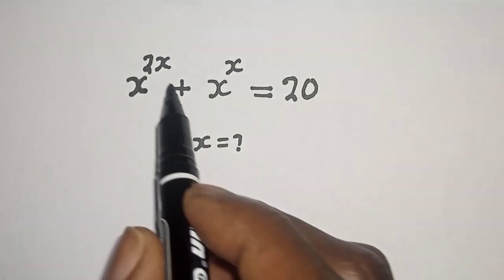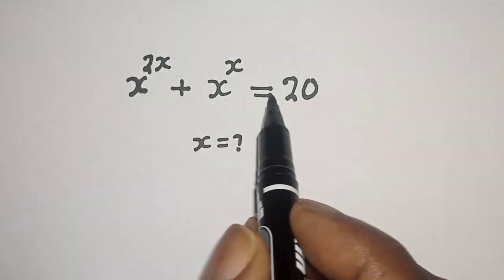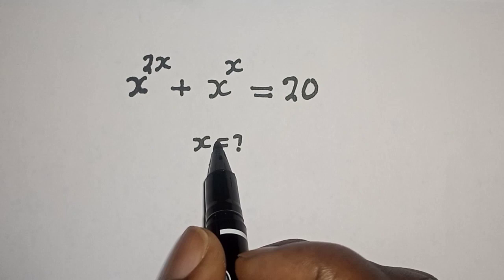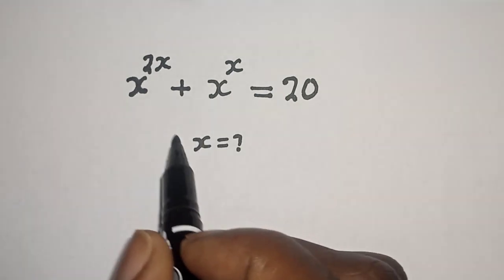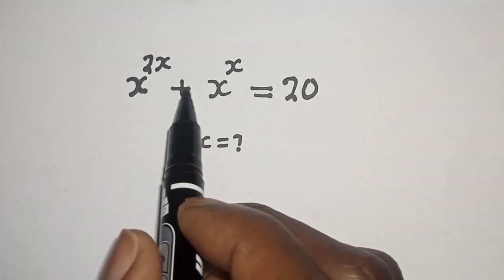s raised to power 2s plus s raised to power s is equal to 20. What is the value of s? Hi everyone, welcome to my class. In this class I want to find the value of s from this beautiful exponential equation.